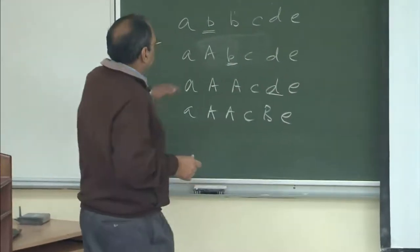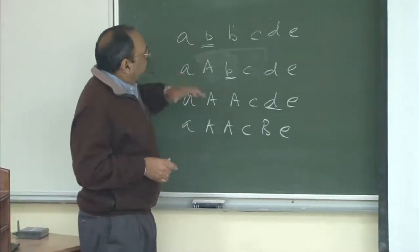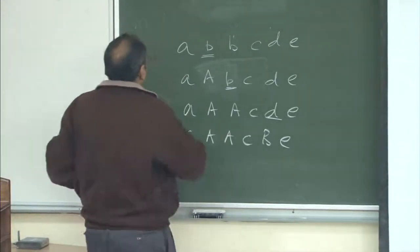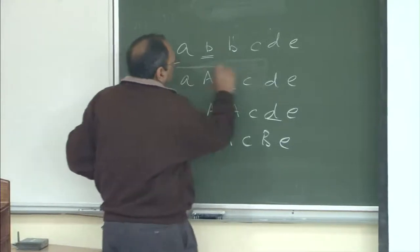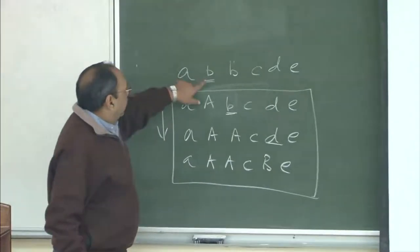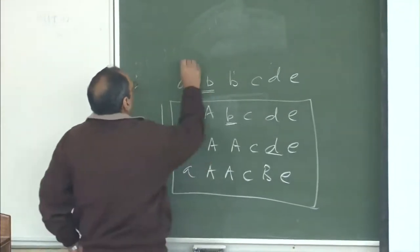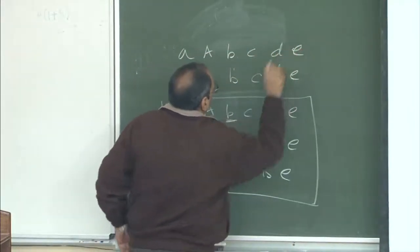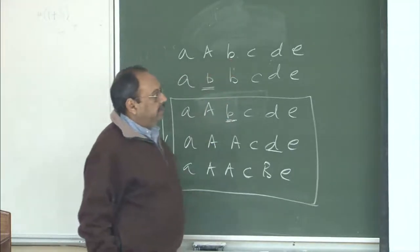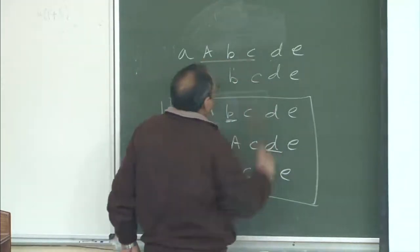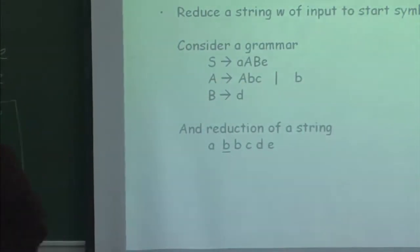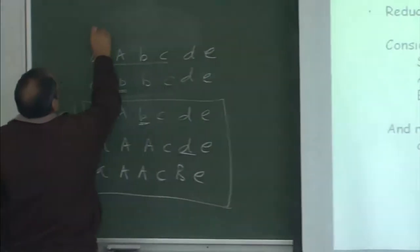When we started making these choices, suppose at some point I made slightly different choices. Rather than matching this B as the right-hand side, I instead match A, B, C which is the right-hand side of another production, and then replace it by its left-hand side.